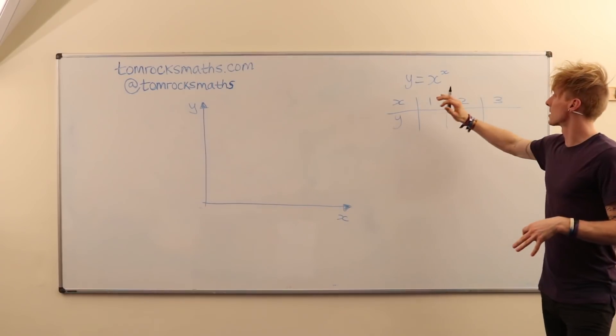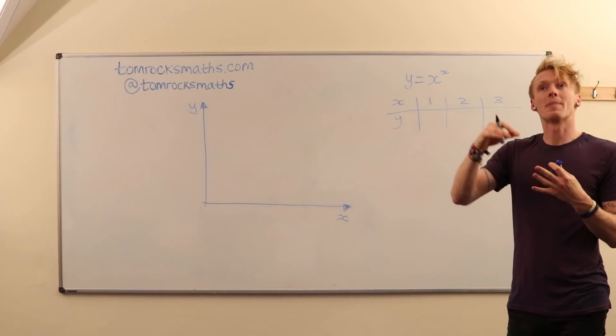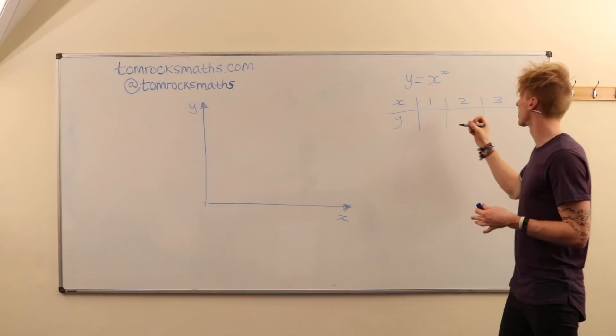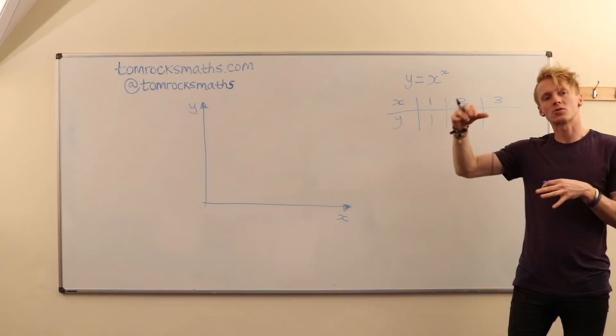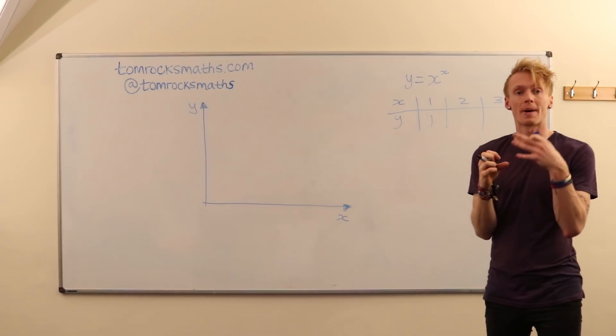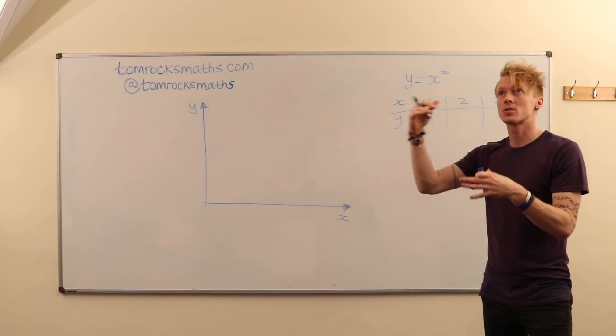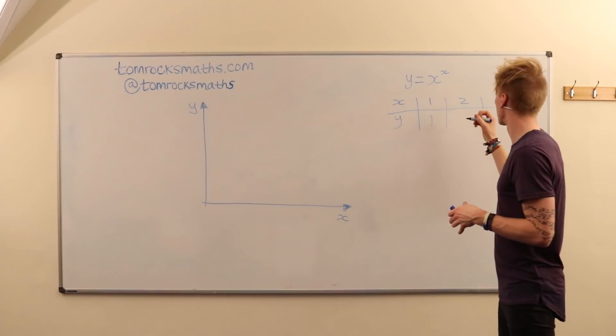So when x is 1, y is 1 to the power 1 which is just 1. When x is 2, y is x to the power x which is 2 to the power 2, which is 2 squared, 2 times 2 is 4.